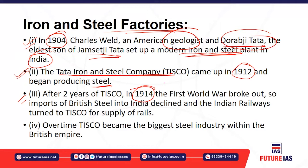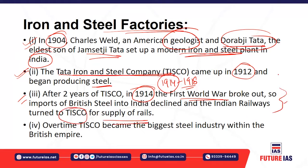In 1914, the First World War broke out. The British used to import British steel, but because of the war, the channels of import fragmented and British steel imports declined. The Indian Railways needed steel for laying rails and turned to TISCO — the Tata Iron and Steel Company — for the supply of rails, leading to increasing demand for Indian-made steel.